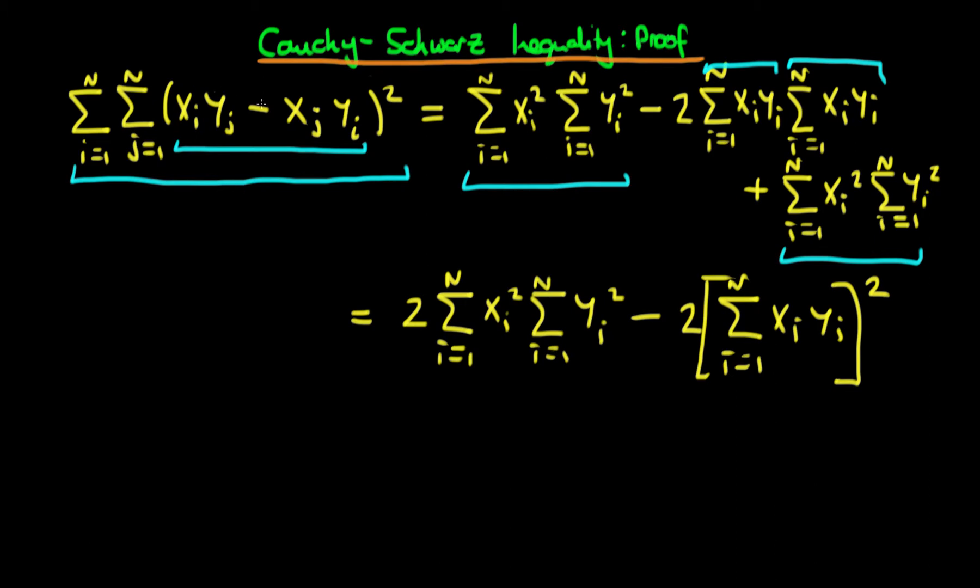So the minimum value that this term inside the parenthesis here can take is 0, which means that the overall sum has a minimum value which is 0. Hence, we know that this entire sum must be greater than or equal to 0, which means that the right-hand side must be greater than or equal to 0.